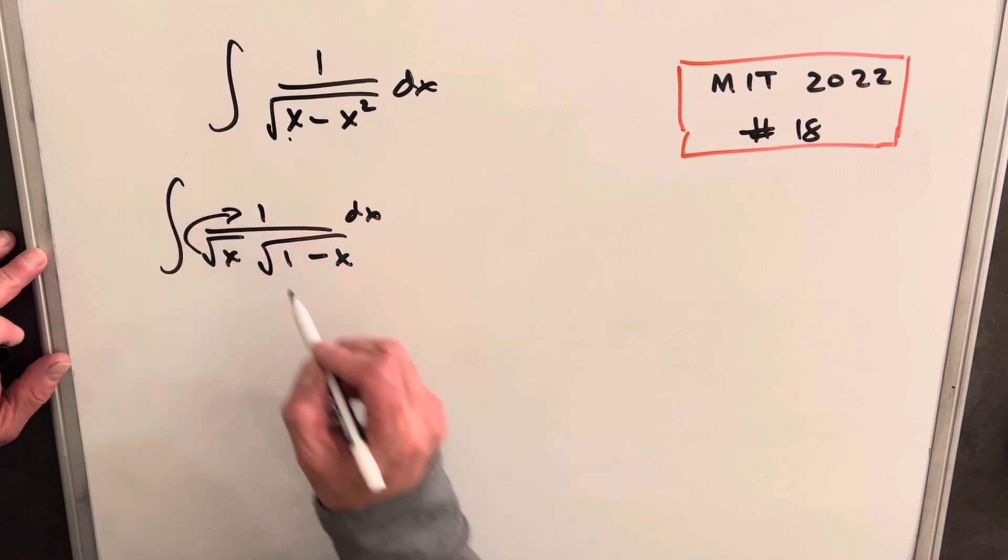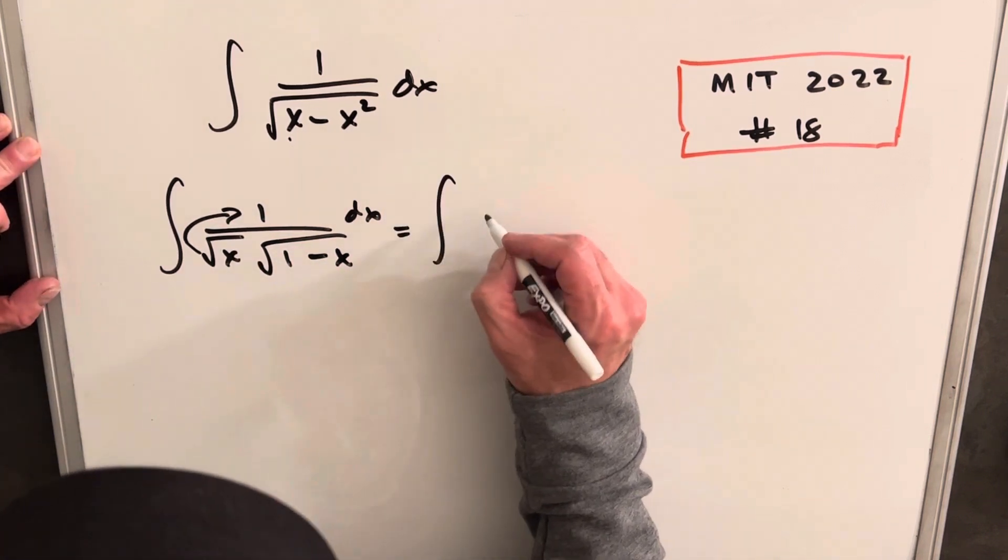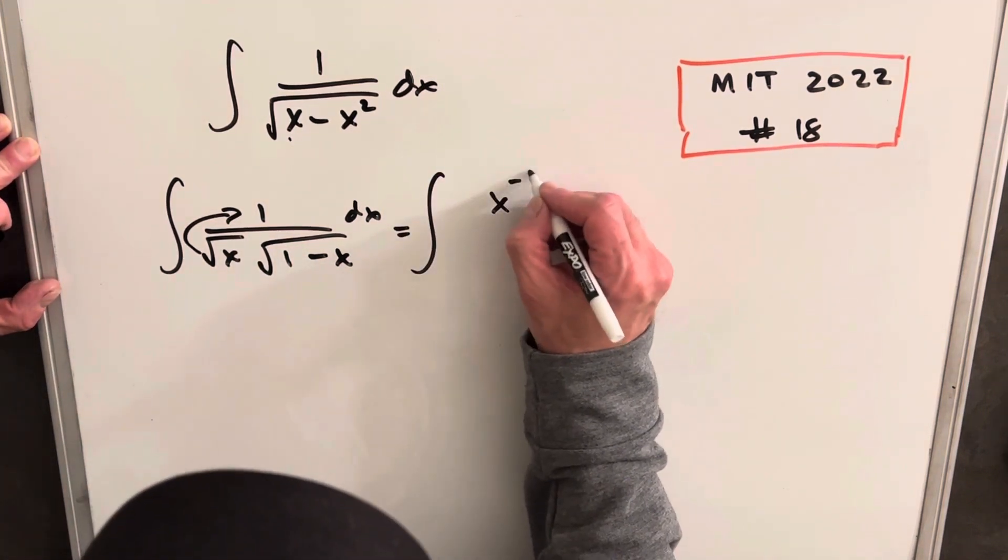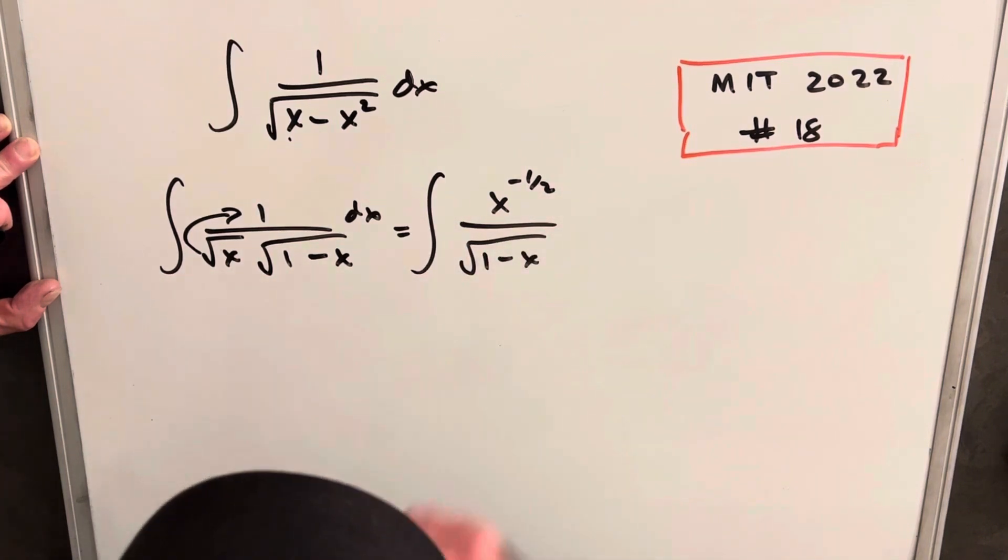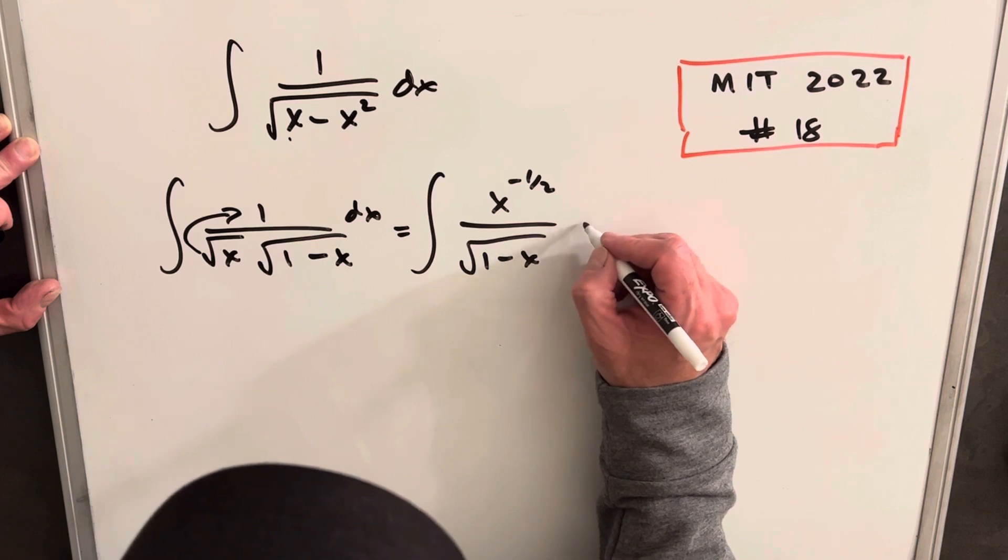Then I think it's going to help us to have this in the numerator. So let's just rewrite again. Let's write this as x to the minus 1 half in the numerator. And we'll have our 1 minus square root of x here in the denominator dx.